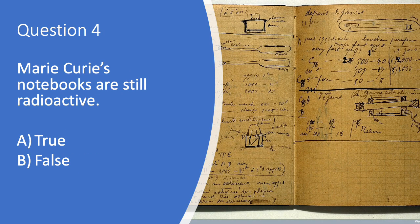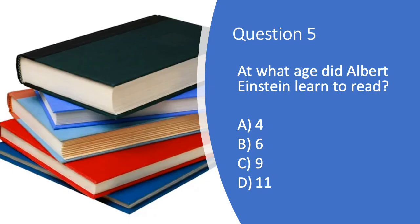Question four: Marie Curie's notebooks are still radioactive. Is that A. True or B. False? Question five: at what age did Albert Einstein learn to read? Was it A. 4, B. 6, C. 9, or D. 11?